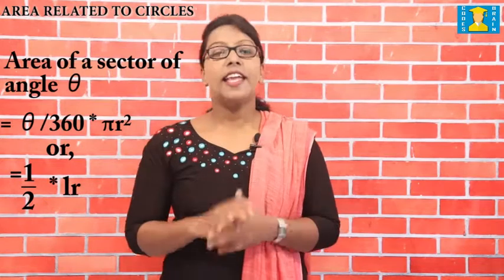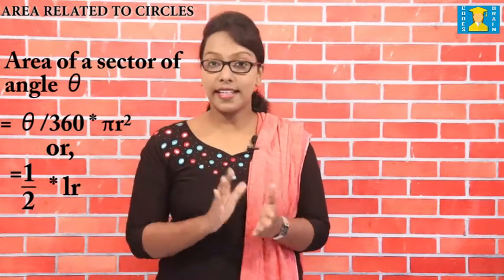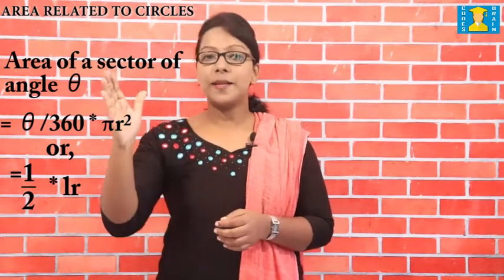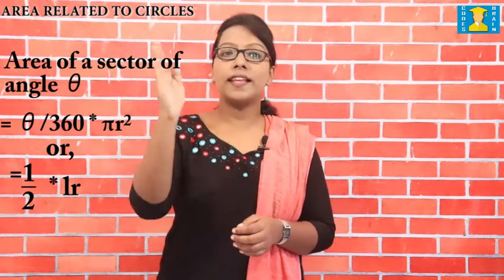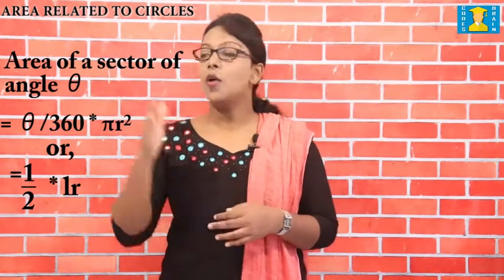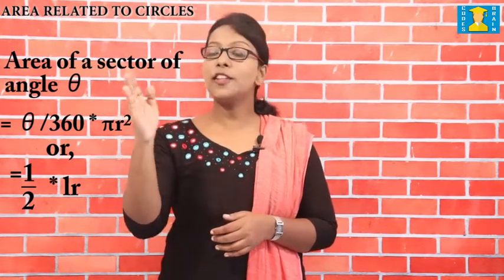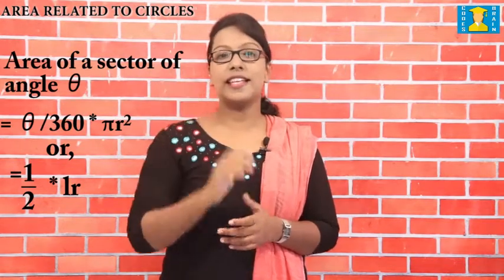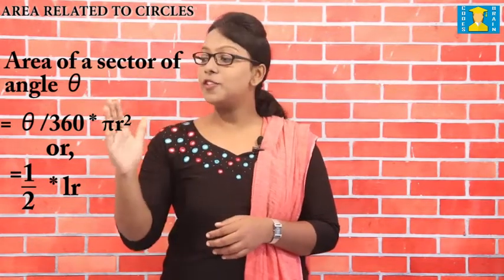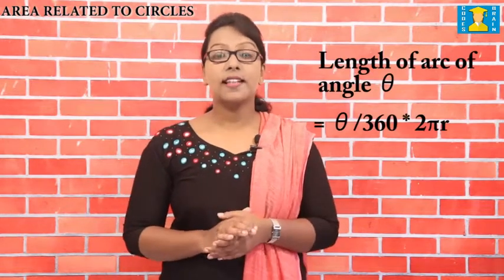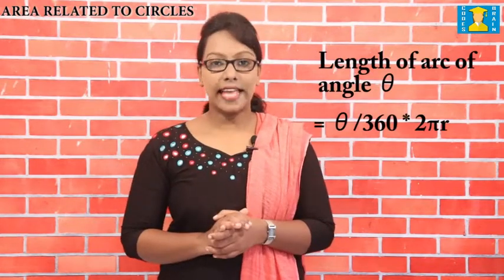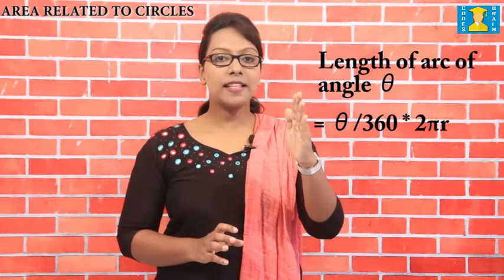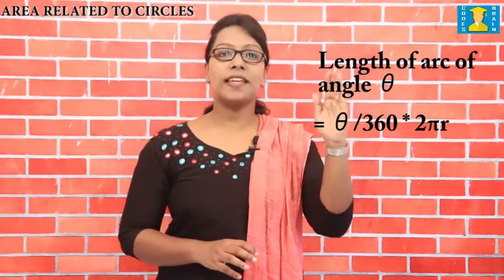Key formulas for the sector: area of a sector of angle θ equals θ/360 × πr², or equivalently 1/2 × length of arc × radius = (1/2)Lr. The length of an arc of angle θ equals θ/360 × 2πr.